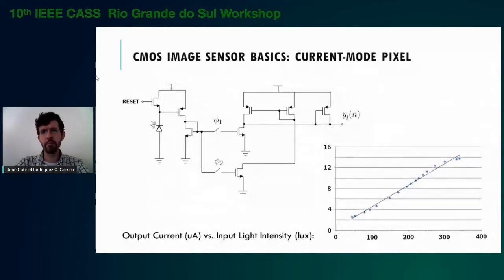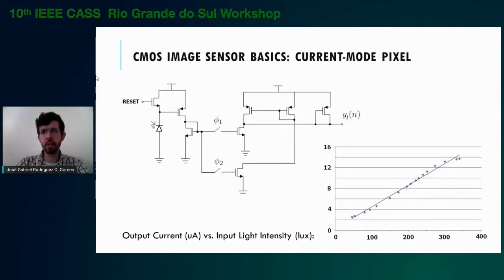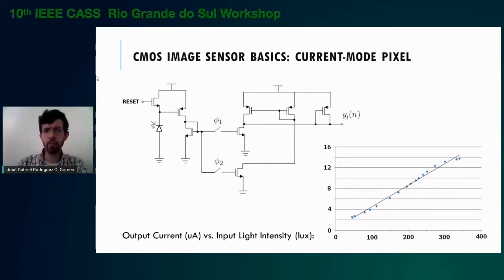Other than voltage mode operation, some pixels represent light intensity signals in current mode. In the pixel used in our works, the second transistor from left to right is not a source follower but a transconductor. Switches V1 and V2 are used for sampling the transconductor output current twice, at the beginning and end of the integration period. The difference between the samples is computed in current mode at the YL of M node, denoting the nth sample from the Lth pixel. That difference current is made available as a reference gate voltage so it can be mirrored elsewhere in the imager. The output current is a rather linear function of input light intensity in lux.